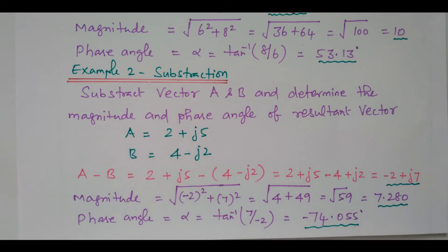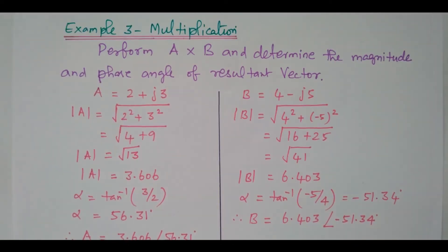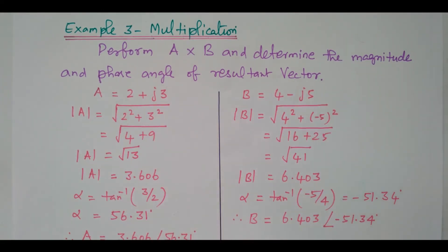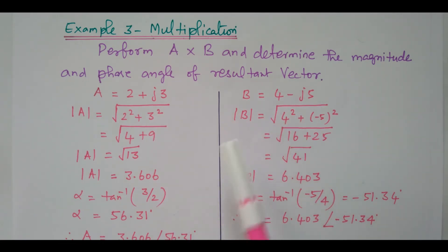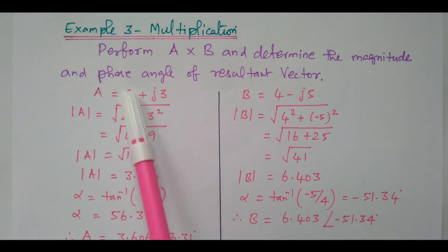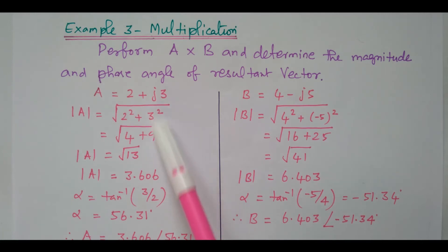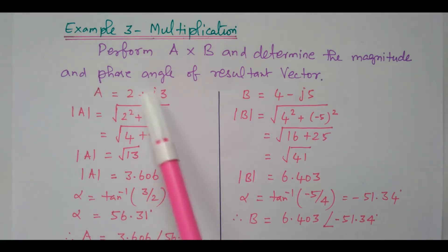Now we will go to the third problem: multiplication. The two vectors available are A equal to 2 plus J3, B equal to 4 minus J5. We need to multiply these two and find the magnitude and angle. It is in rectangular form. We cannot multiply easily in rectangular form, but it is easier to convert into polar form and then go for multiplication.